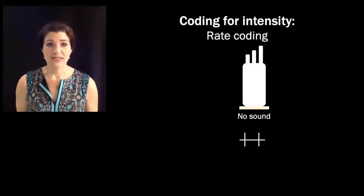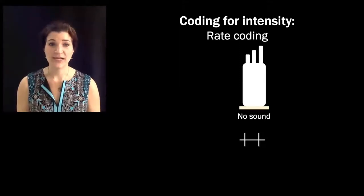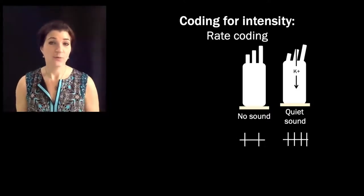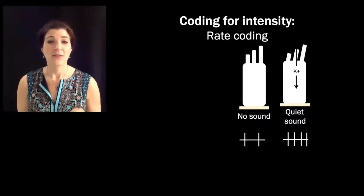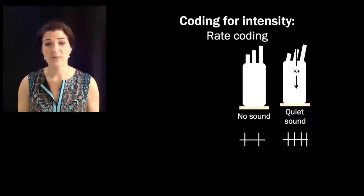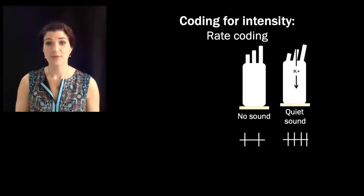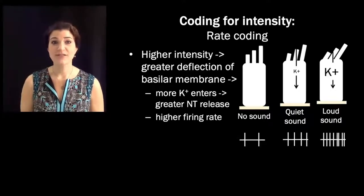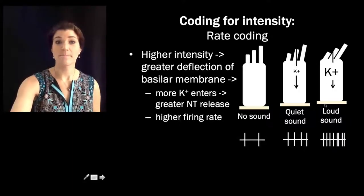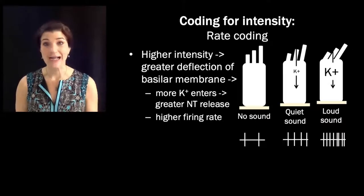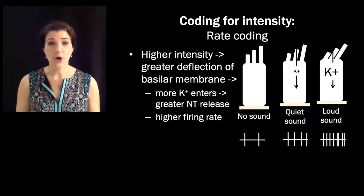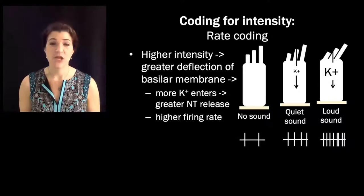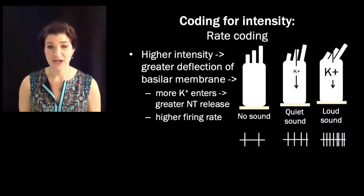When there is no sound, the hair cell fires at its baseline rate. A very quiet sound will lift the basilar membrane up just a little bit, meaning the stereocilia press ever so gently on the tectorial membrane, those ion channels open a small amount for a short time, and some potassium enters. But with a high-intensity sound, the basilar membrane deflects more, the stereocilia are jammed harder against the tectorial membrane, the ion channels are open more and for longer, more potassium enters, and the cell has a higher firing rate. So louder sounds are associated with faster firing rates.